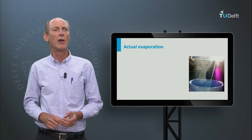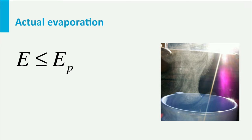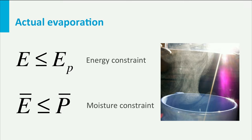There are two conditions that apply to evaporation. The actual evaporation E is always less than the average annual potential evaporation. And the average annual evaporation should always be less than the precipitation. The first condition is an energy constraint; the second is a moisture constraint.